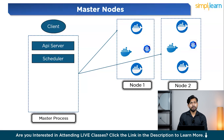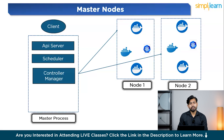The third component is the controller manager. The controller manager is like the quality control department of Kubernetes. It constantly monitors the state of the cluster and ensures that everything is running as it should. If something goes wrong — like a pod crashes or a node goes offline — the controller manager steps in to fix it. It is responsible for ensuring that the desired state of the cluster matches the actual state. For example, if you define that you want three replicas of an app running and one of them crashes, the controller manager will automatically create a new replica to maintain the desired state.